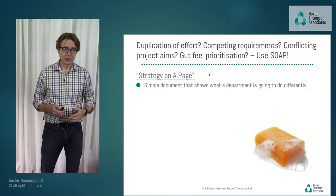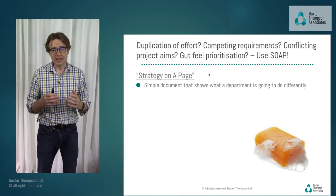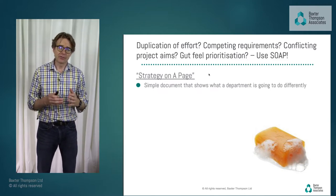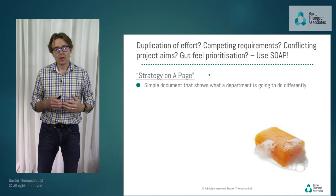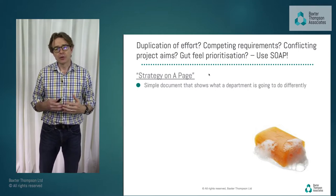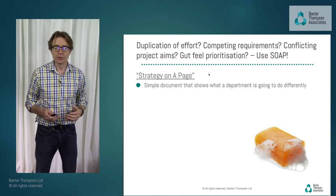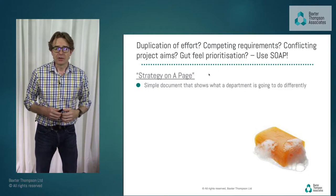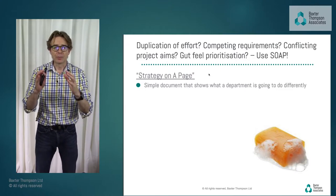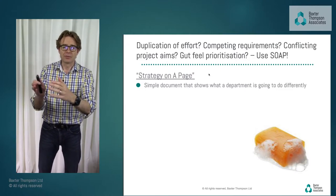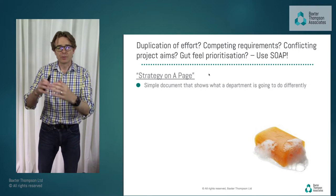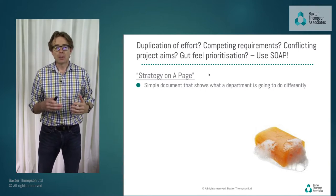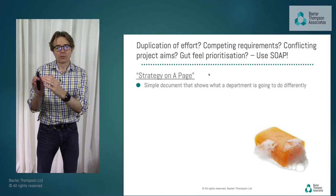Strategy on the page is a simple document — it does what it says on the can. It effectively states what a department or team are going to be doing differently. We're here today, and imagine in 18 months' time we're going to be in a different state, working differently. The strategy on the page is our plan on how to get from here to there.